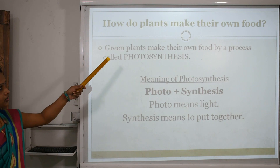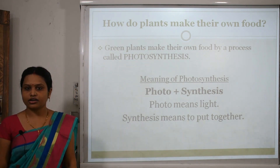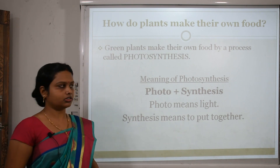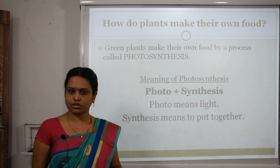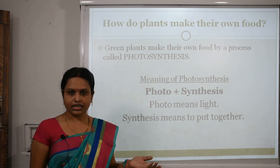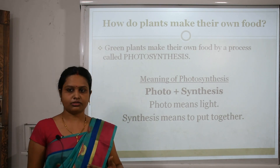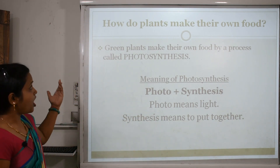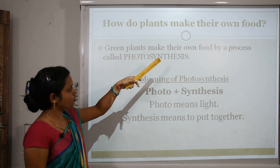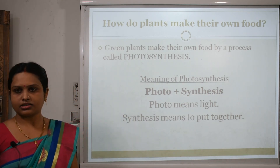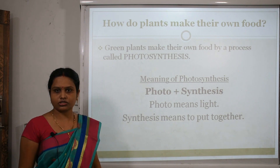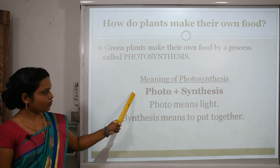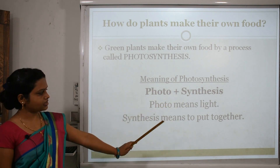Now, how do plants make their own food? All living things require food for growth. We also need food, and plants also need food for growth. Green plants make their own food by a process called photosynthesis. The meaning of photosynthesis comes from photo plus synthesis — photo means light and synthesis means to put together.